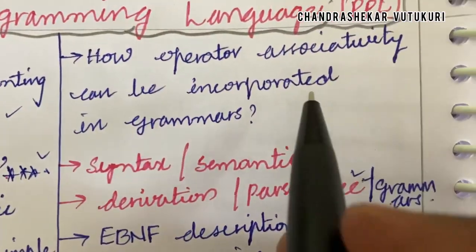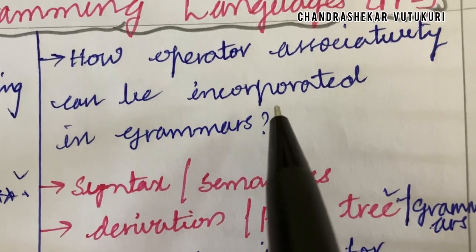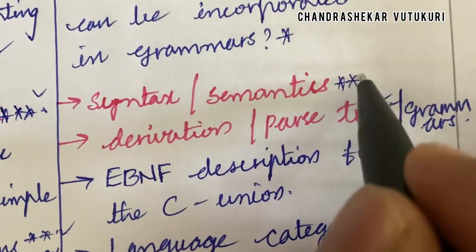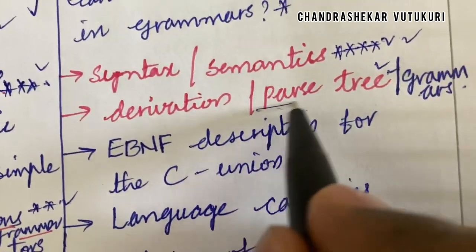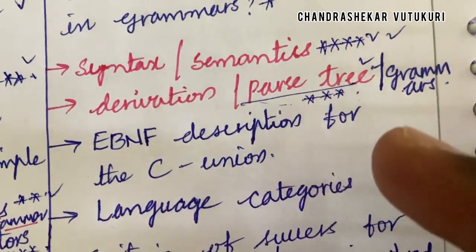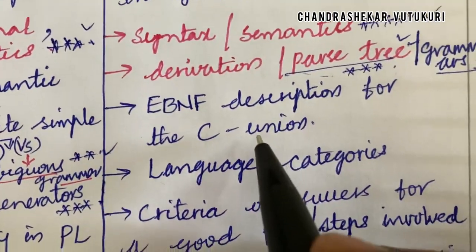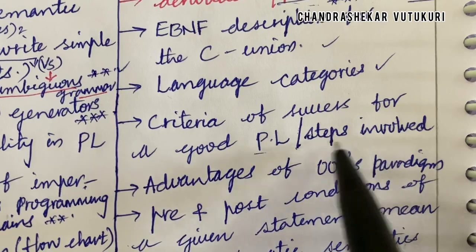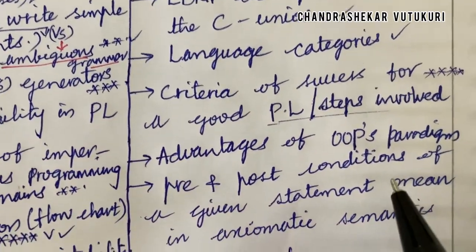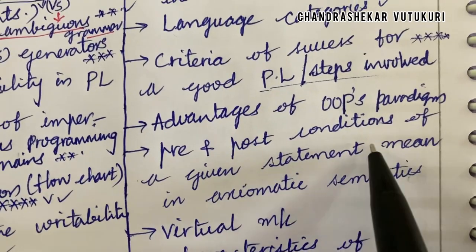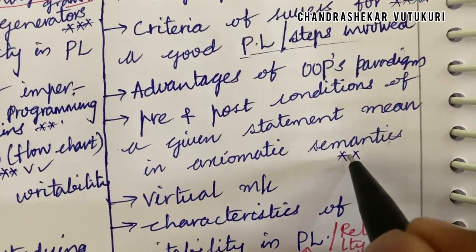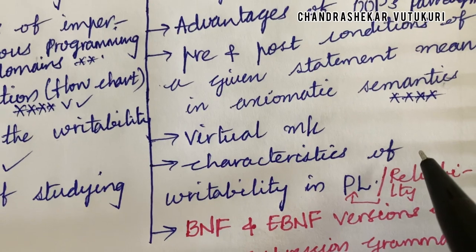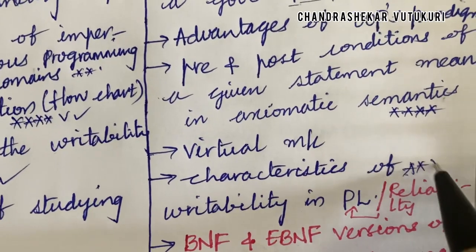If you haven't taken membership on my channel, please do it immediately, as you are going to receive very important questions as per JNTU. How operator associativity can be incorporated in grammars, and syntax versus semantics, is a top gunshot question for 2 marks. Derivation and parse tree-related questions may be 2-mark or 5-mark questions. Grammars, their differences and definitions are important. Language categories is a short question. Criteria of success for a good programming language is likely a long question. Advantages of BNF, and pre- and post-conditions of a given statement in axiomatic semantics, is a top question expected in the paper — either 3A or 3B. Define the term virtual machine and explain it. Characteristics of writeability or reliability in a programming language may also be a 5-mark question.